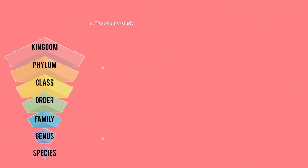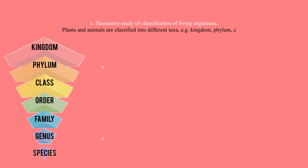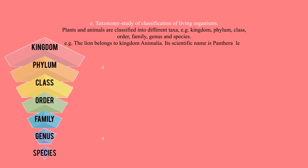E. Taxonomy — the study of classification of living organisms. Plants and animals are classified into different taxa, for example: kingdom, phylum, class, order, family, genus, and species. For example, the lion belongs to kingdom Animalia. Its scientific name is Panthera leo — Panthera is the genus name while leo is the specific name.